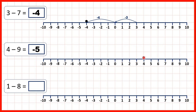Or what we could have done is make one jump of four to get to zero, because four minus four is zero. But then, because we've only subtracted four and we need to subtract nine, we need to subtract another five. And then zero minus five is minus five.